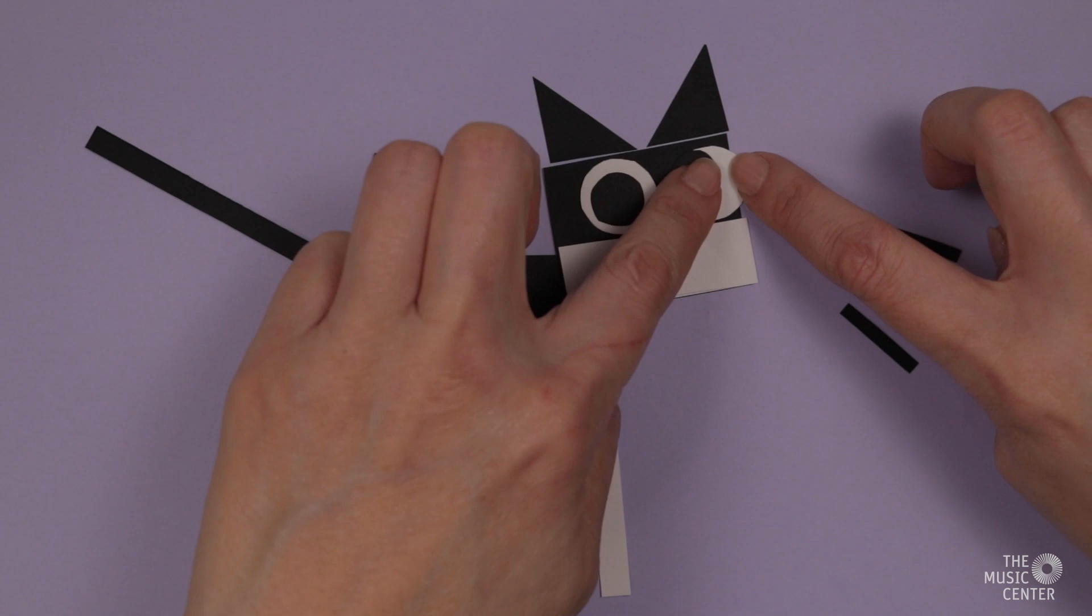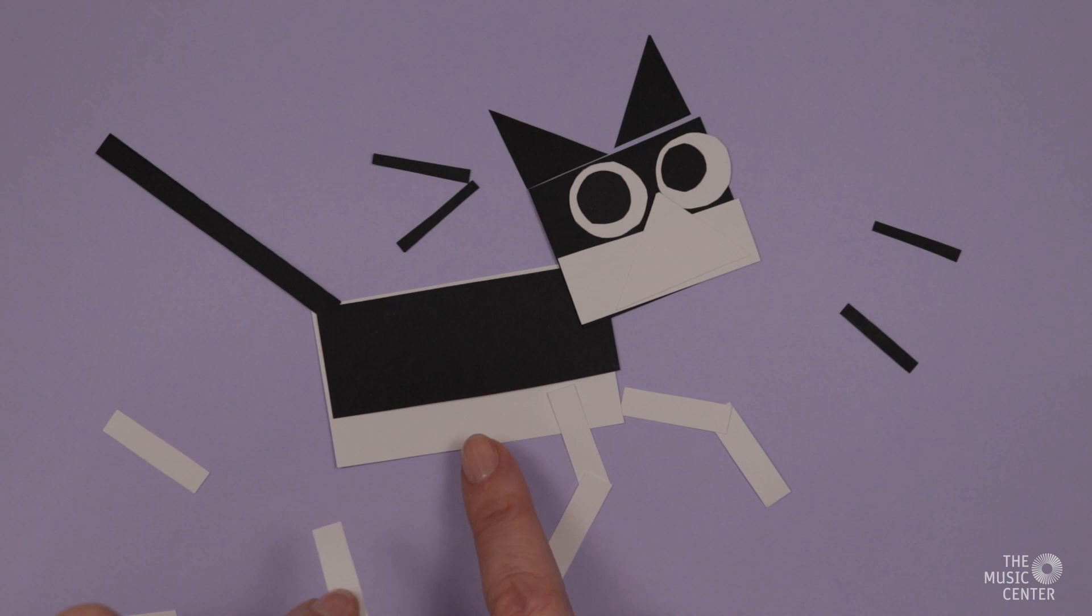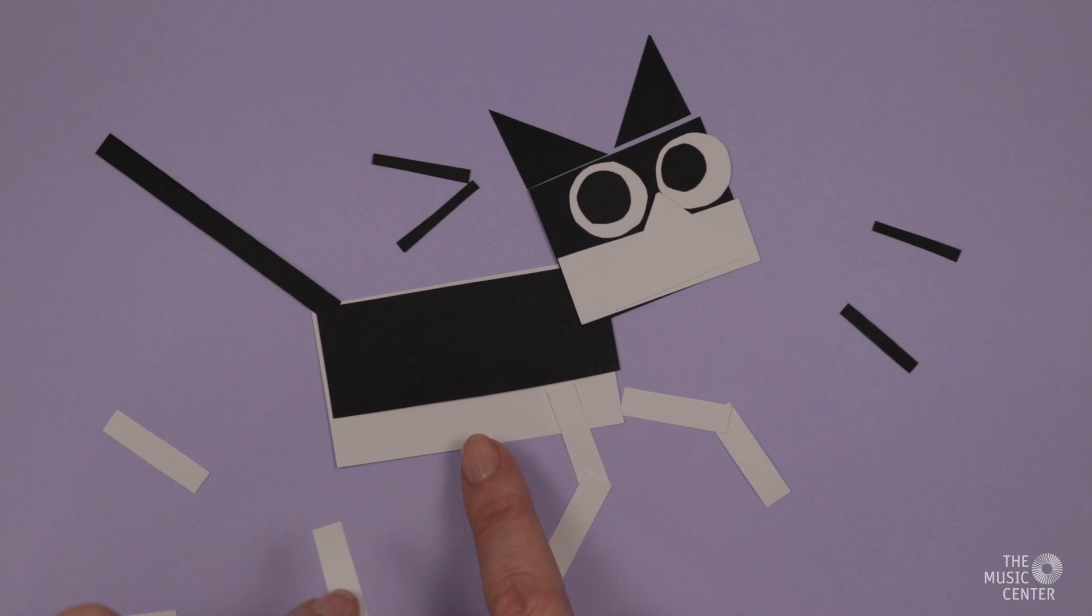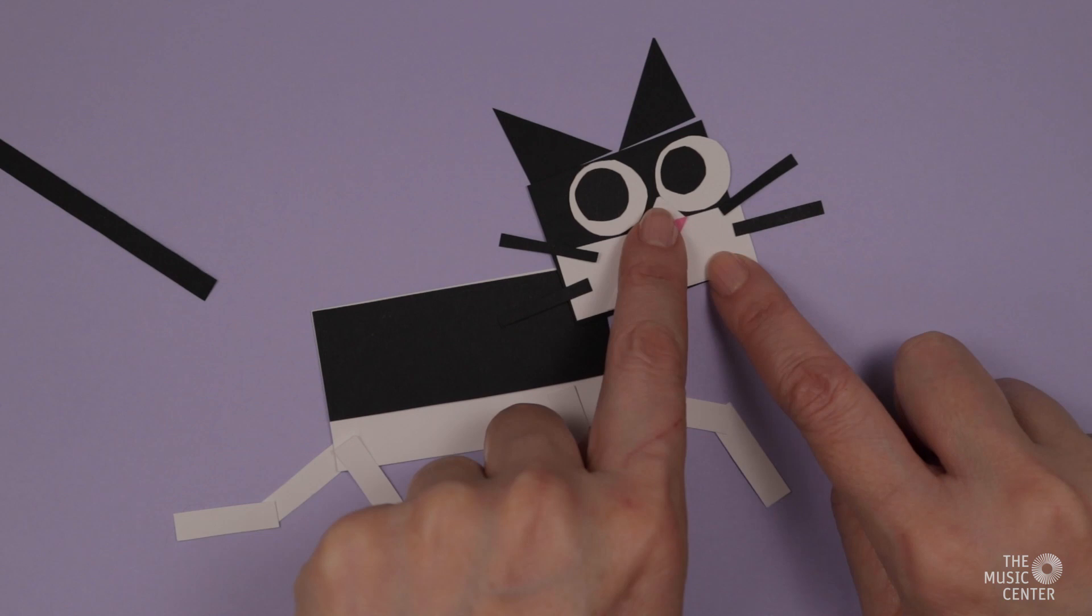I'll add joints to Cosmo's legs and tail pieces so I can pose him like he's moving more. And I have a little scrap of pink paper to make his nose too.